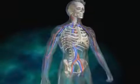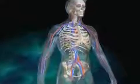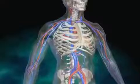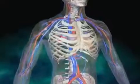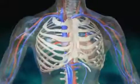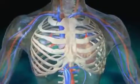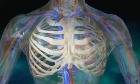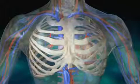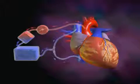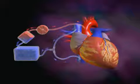Coronary artery bypass graft is a commonly performed procedure to reroute the flow of blood around a blocked coronary artery. During most bypass surgeries, the heart is stopped and a heart-lung machine takes over the work of the heart and lungs.